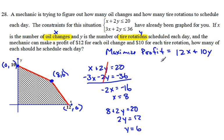I'm ready to figure out the profit at each of those points. My profit at 0, 10 is going to be 12 times 0 plus 10 times 10. That's going to be 100.